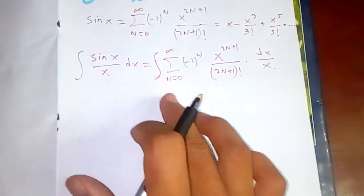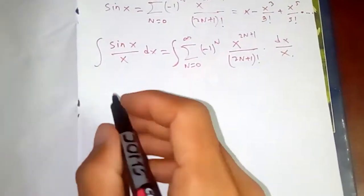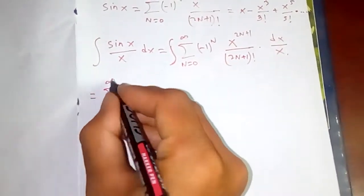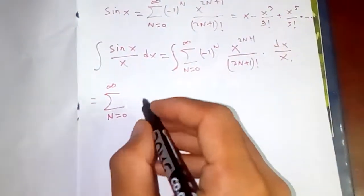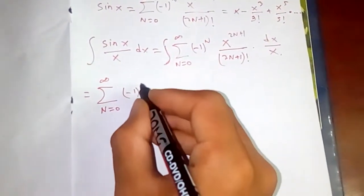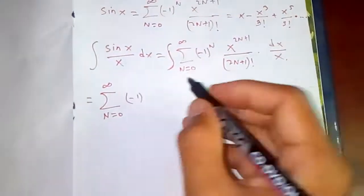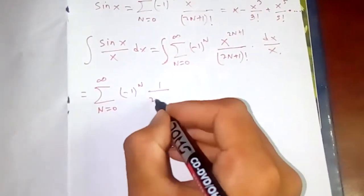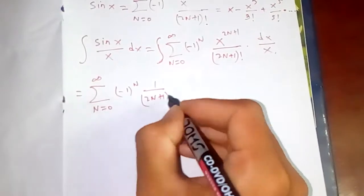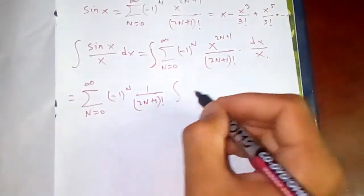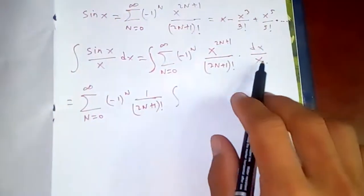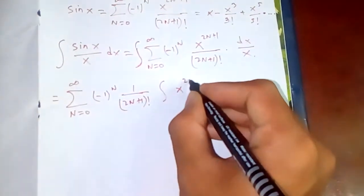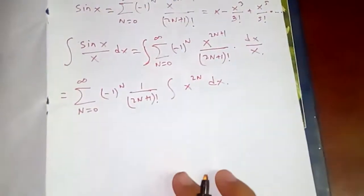Now let's say that this integral and summation can interchange. So since this is independent of x, we can pull this out because the integral is with respect to x. And this x here, x power 1, we cancel out. What do we have? x to the 2n dx.